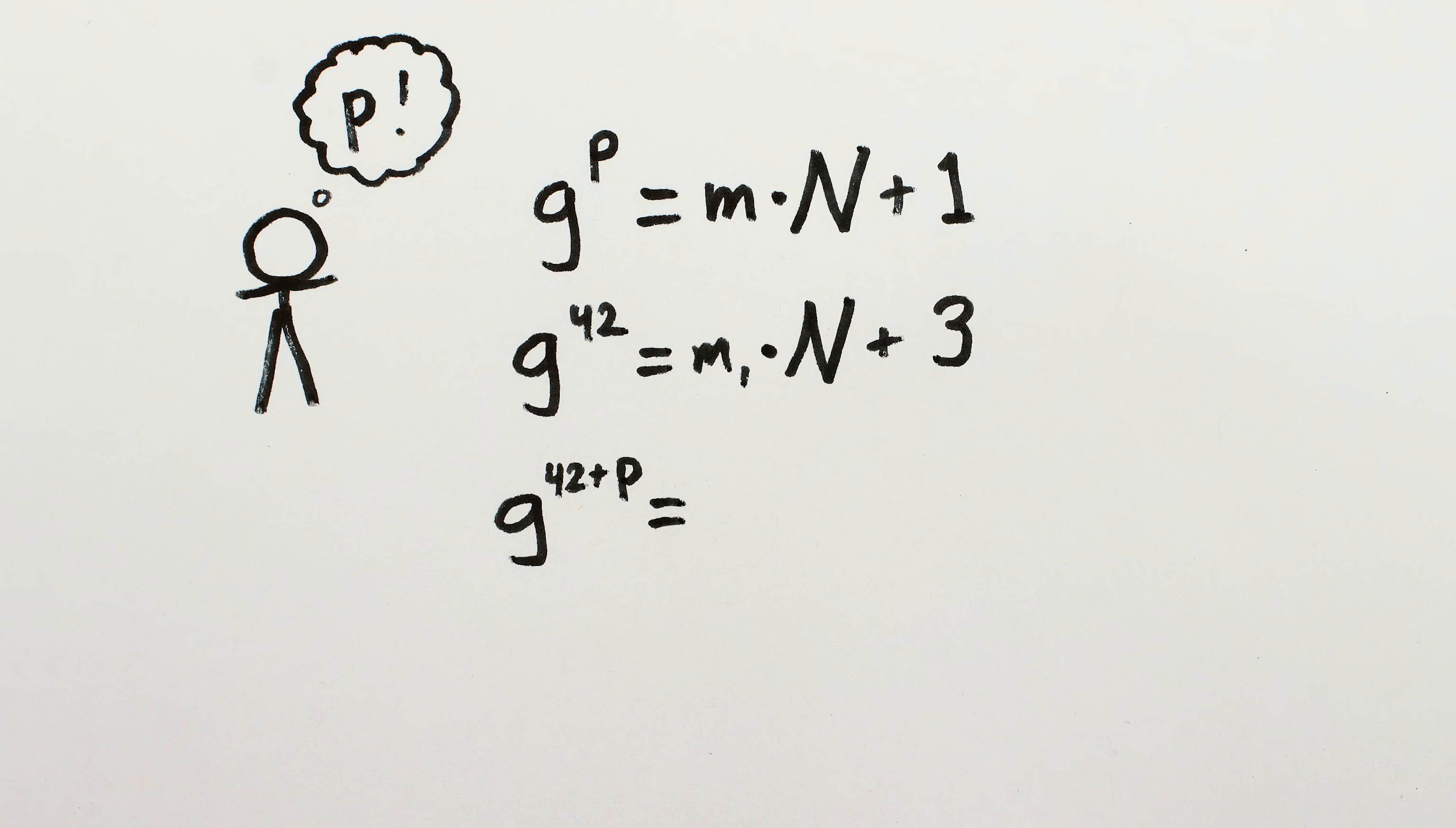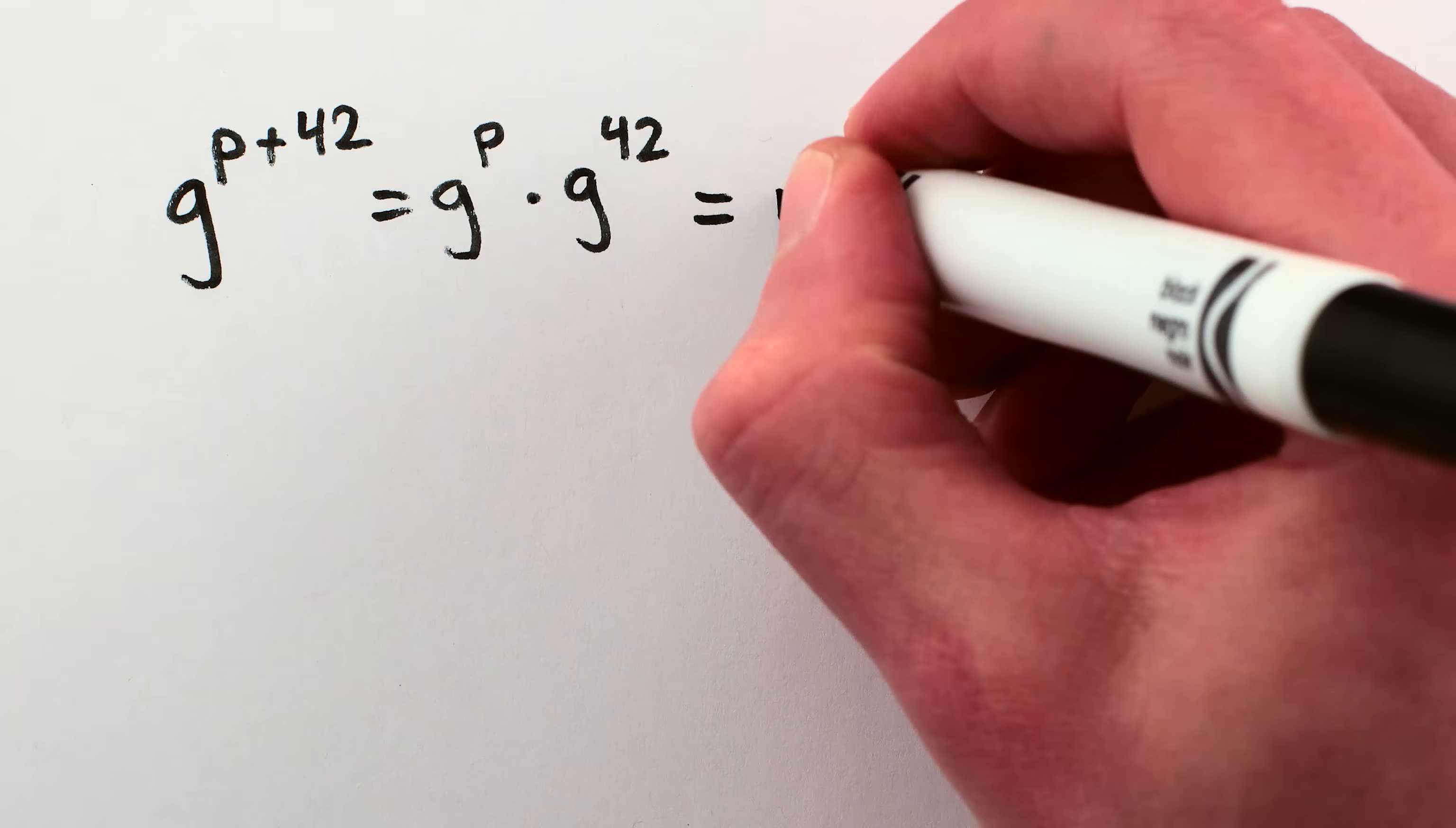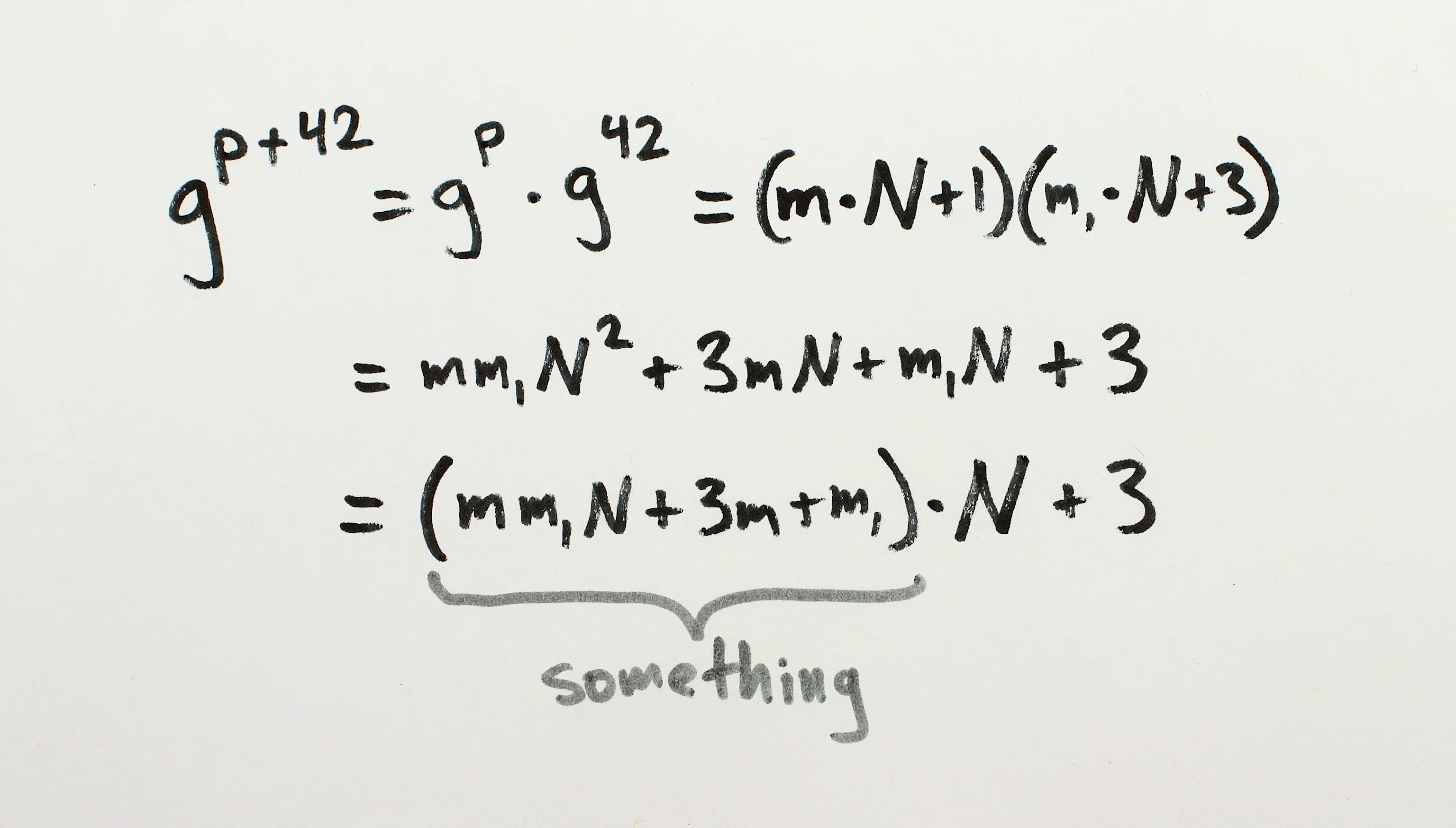If we raise our guess to that random power plus P, it's again three more than a multiple of n. If we raise our guess to that random power plus 2P, it's again three more than a multiple of n. And so on. It's pretty straightforward to show why this works by multiplying out something times n plus 1 with something else times n plus 3. You get a different something times n, again plus 3.